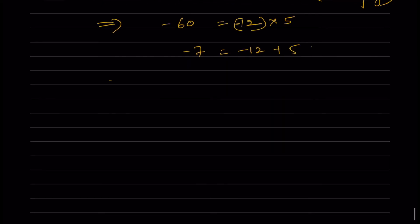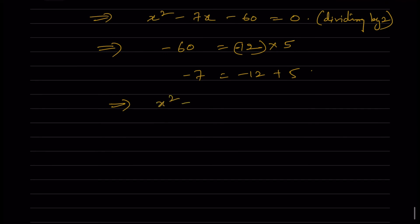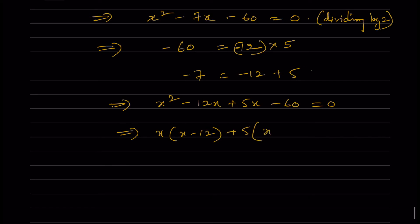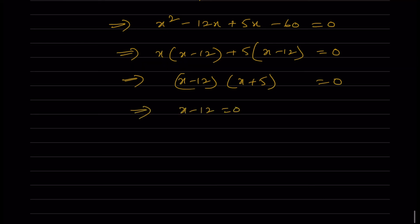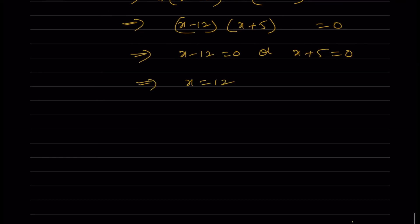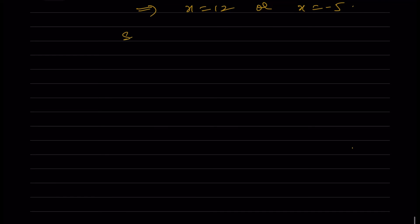So 2x² - 14x + 49 - 169 = 0, giving 2x² - 14x - 120 = 0. Dividing by 2: x² - 7x - 60 = 0. The factors of 60 are 12 × 5, and -12 + 5 = -7. So x² - 12x + 5x - 60 = 0, giving x(x - 12) + 5(x - 12) = 0, which implies (x - 12)(x + 5) = 0. So x = 12 or x = -5.